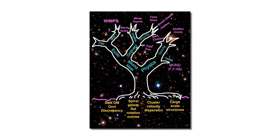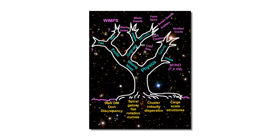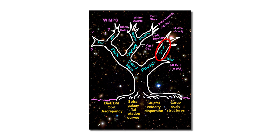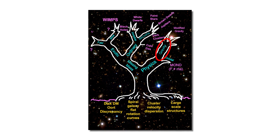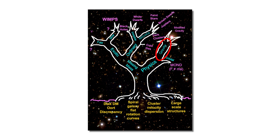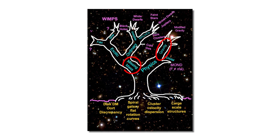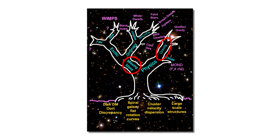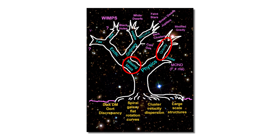If the answer is not a misunderstanding of motion, then what remains is gravity. Gravity could be wrong because we literally don't understand the theory of gravity, or because there is invisible matter. That's the next branch in the tree, and both of them remain possible explanations.